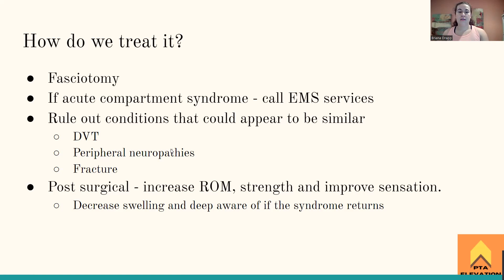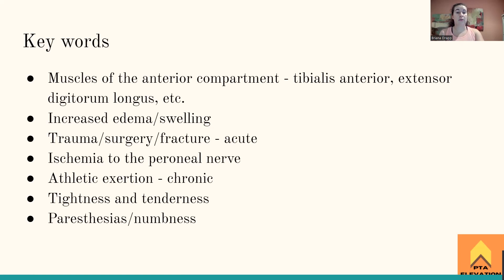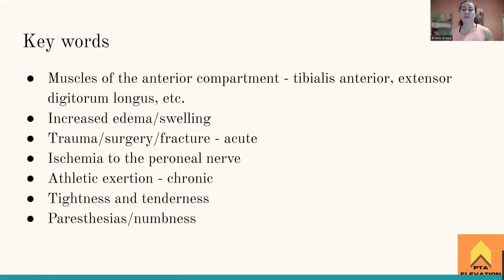Key words to watch for: muscles of the anterior compartment — tibialis anterior, extensor hallucis longus, extensor digitorum longus, peroneus tertius. Increased edema and swelling are hallmark signs. Trauma, surgery, or fracture indicates acute compartment syndrome — the medical emergency. Ischemia to the deep peroneal nerve, the main nerve innervating those muscles, is also a key finding. Athletic exertion is the keyword indicating chronic compartment syndrome.